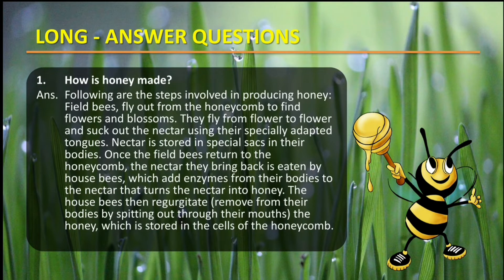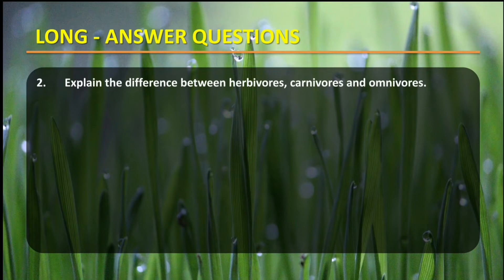So the field bees fly from flower to flower and suck out the nectar, and once they are back, they mix their enzymes into the nectar and regurgitate it — removing the nectar plus the bodily enzymes. The honey is then stored in the cells of the honeycomb. Let us move on to the second question.